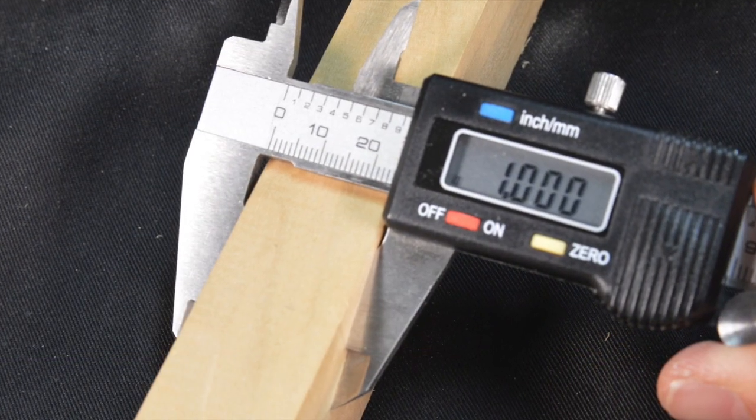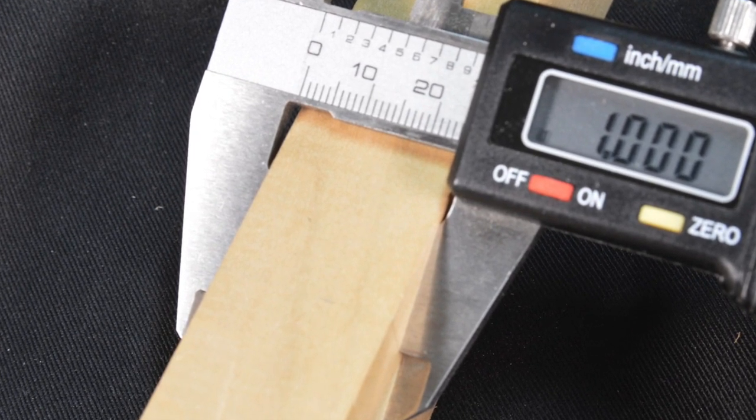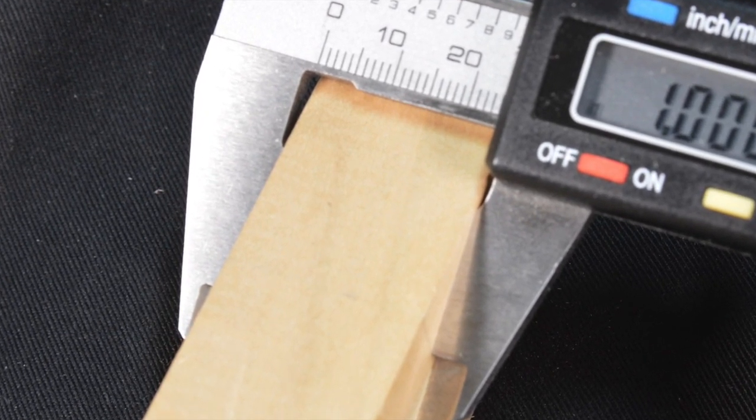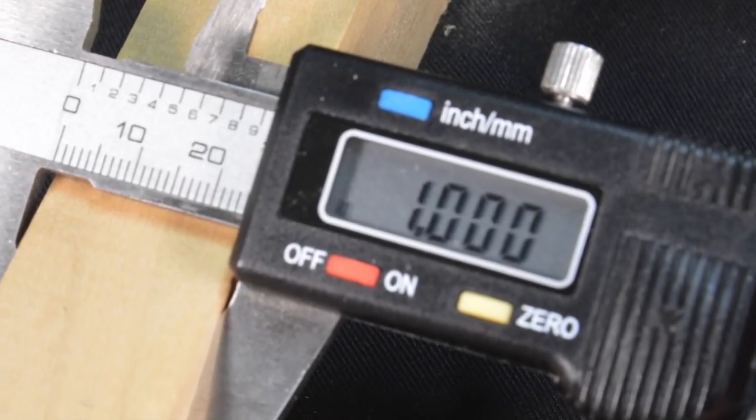To make an outside measurement, slide the jaws open and place the item to measure between the outside measurement jaws. Slide the jaws together until they gently contact the item. Read the measurement on the LCD screen.